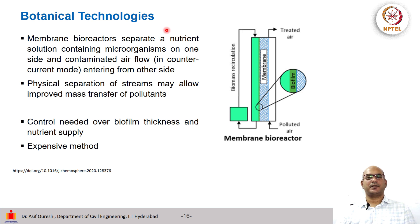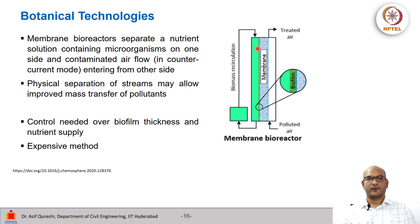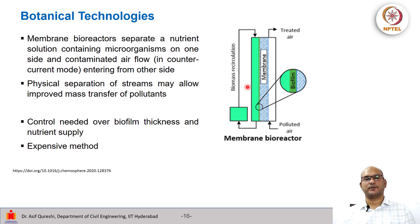Then we have botanical-based technologies such as membrane bioreactors. Here polluted air flows upward. There is a membrane with a biofilm on the other side, and recirculation of biomass is happening. These membrane bioreactors separate a nutrient solution containing microorganisms on one side — shown in green — and contaminated air flows in a counter-current mode on the other side. This physical separation of streams may allow for improved mass transfer of pollutant from air to the solution, and the biofilm aids in degradation. However, controlling the biofilm and nutrient supply is required, and it is an expensive method.